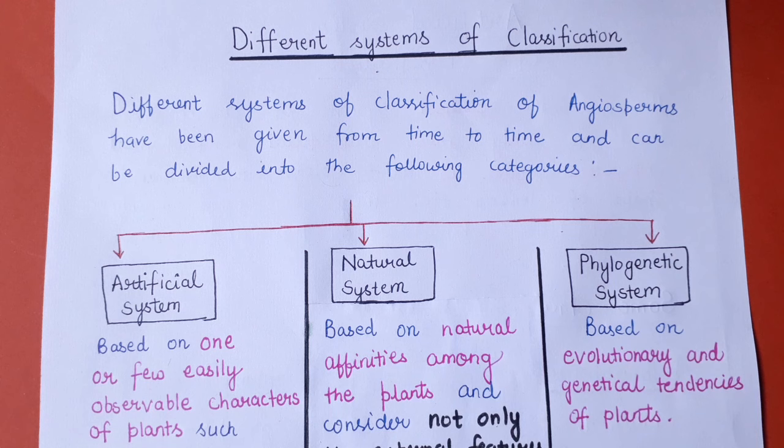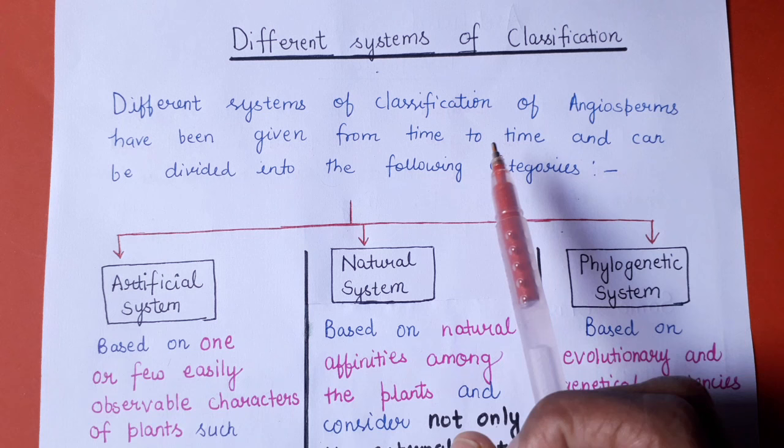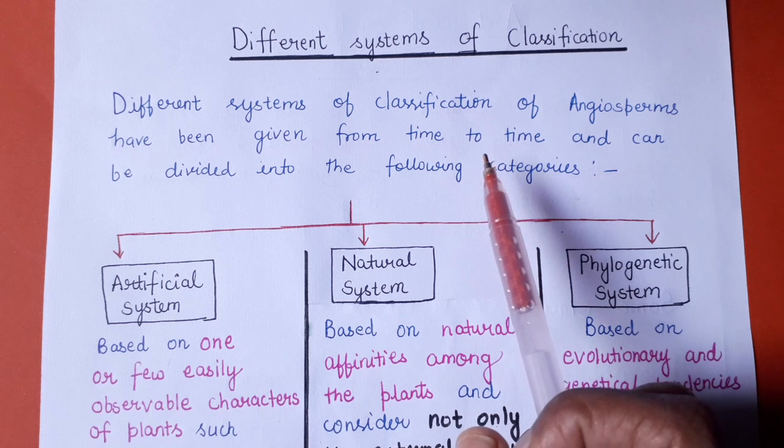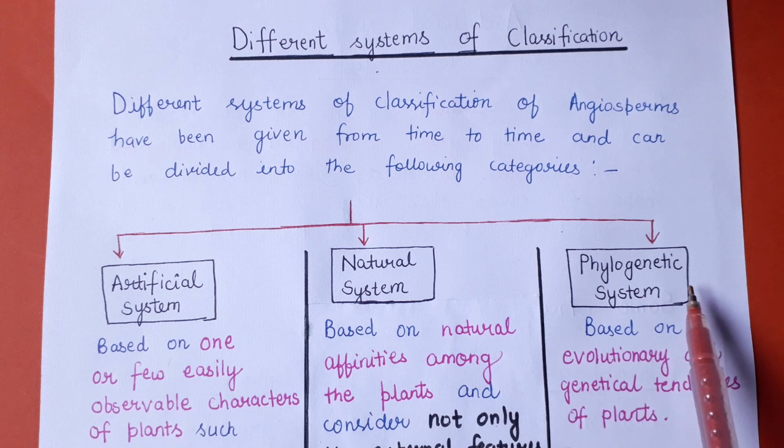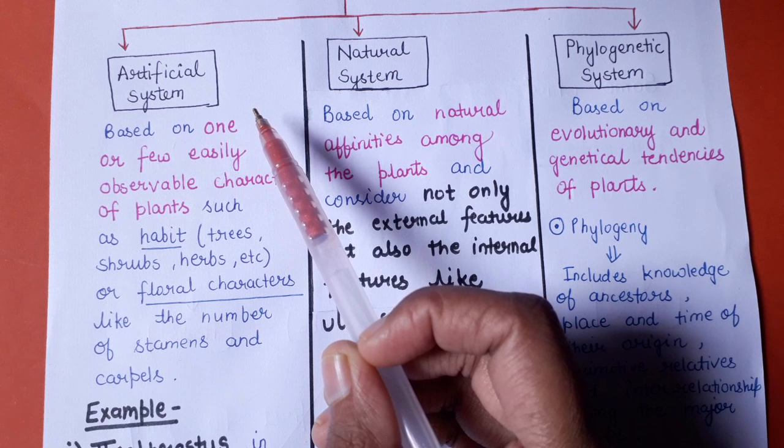Hello everyone, welcome to my channel all about biology. This is Jyoti Varma. Today we are going to talk about different systems of classification. Angiosperms have been classified in different categories, and there are different ways of classification. Basically there are three types: artificial system of classification, natural system of classification, and phylogenetic system of classification.